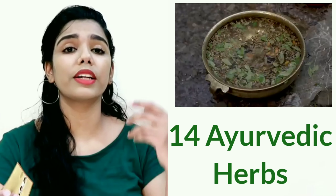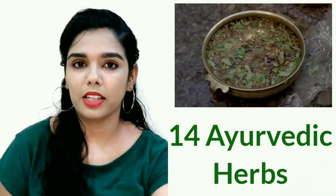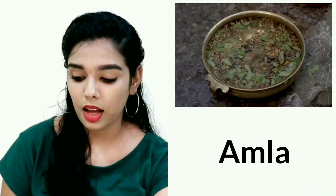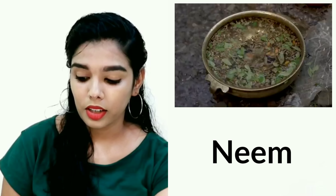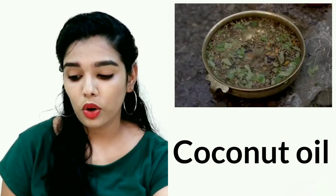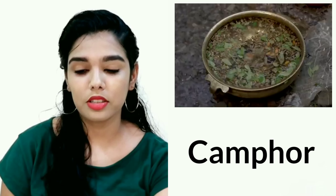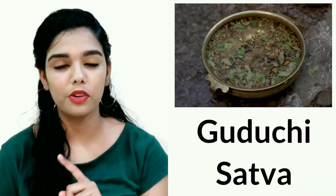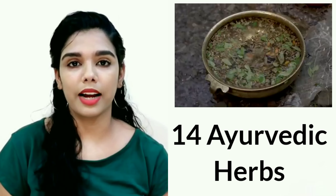If you look at the 14 herbs used in this oil: Bringa, Amla, Brahmi, Draksha, Neem, Curry Leaf, Aloe Vera, Coconut Oil, Almond, Yasti Madhu, Camphor, Indicoy, and one additional herb — adding up to 14 herbs total.